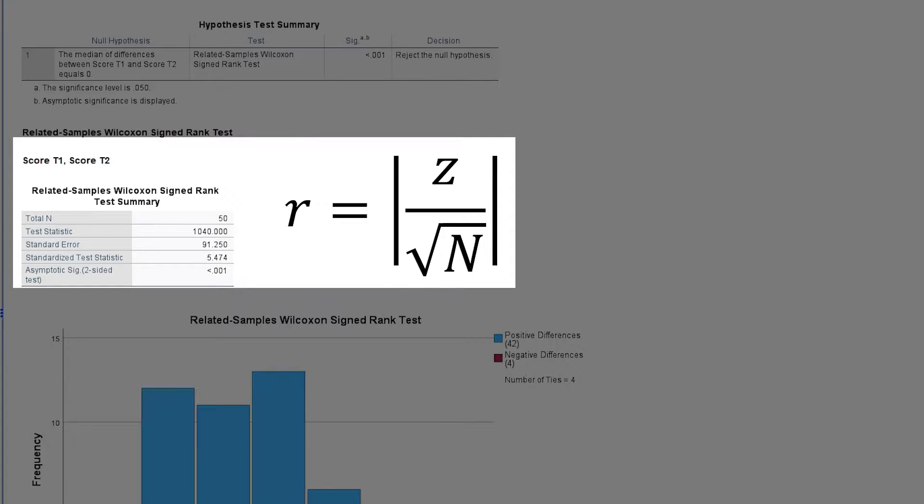When we look closely in the second table, you can spot both: total n being the number of paired observations and the standardized test statistic right above the significance.